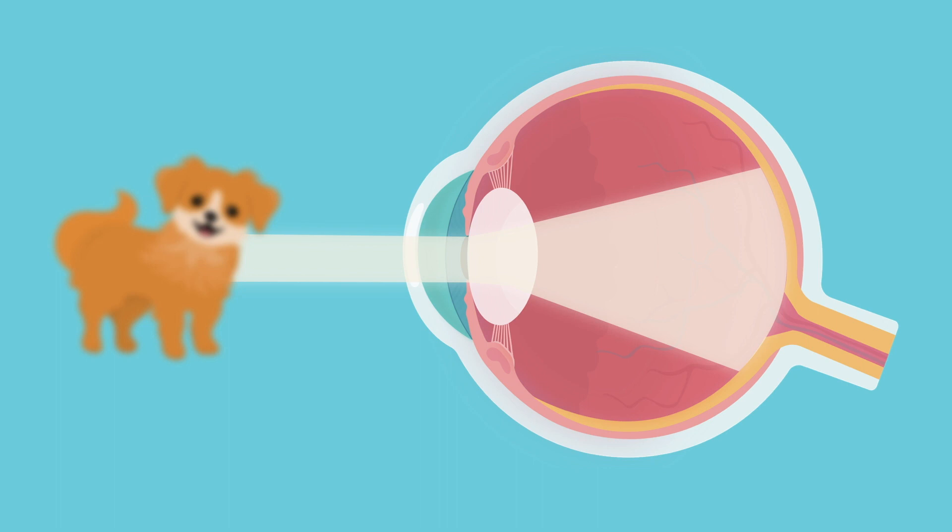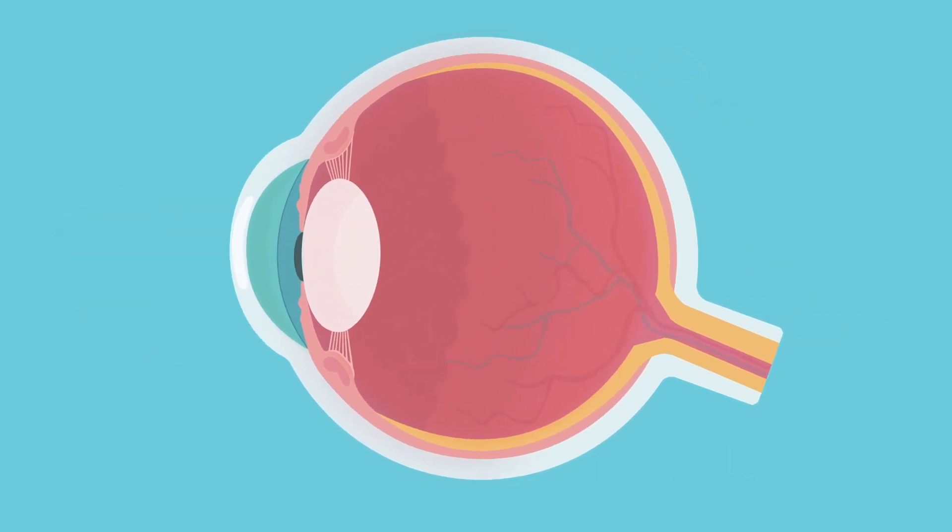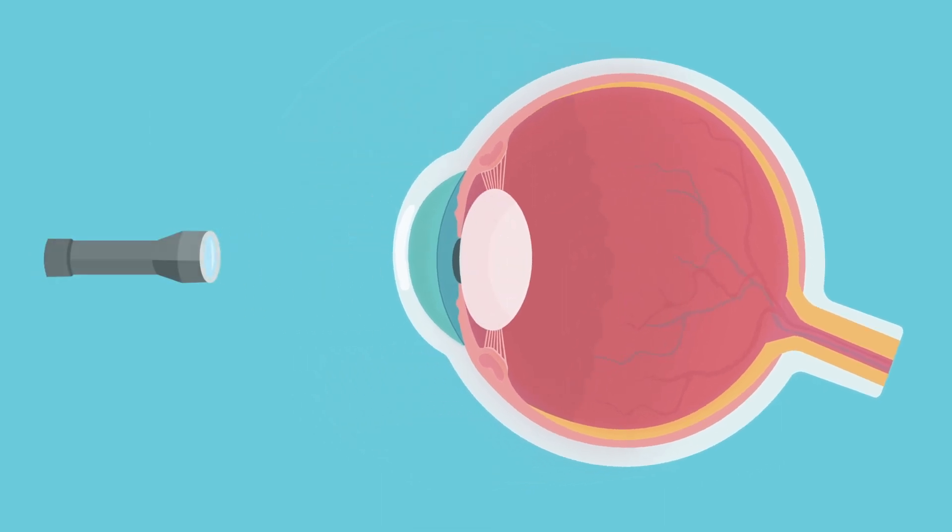But our eyes are equipped with a structure that deals with this issue beautifully. This structure sits in the anterior part of our eyeballs behind the pupil, and it is known as the lens. When light passes through the lens, it gets refracted, meaning its trajectory gets deviated by a certain angle.